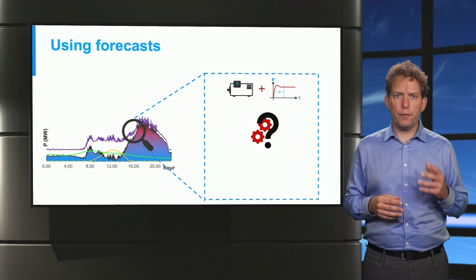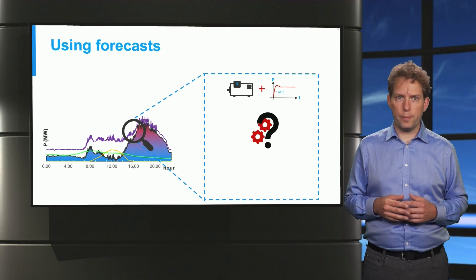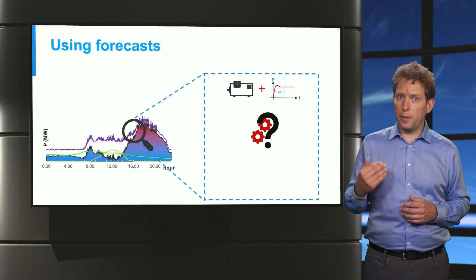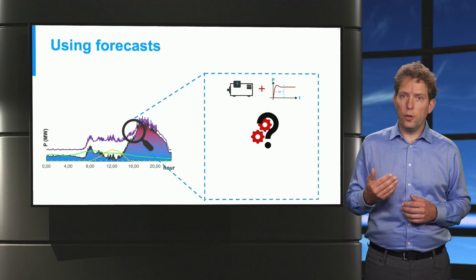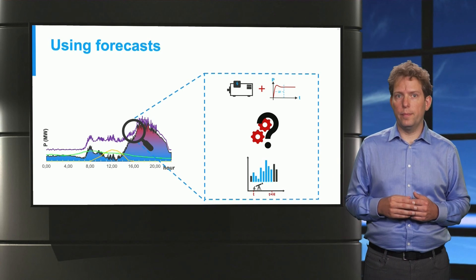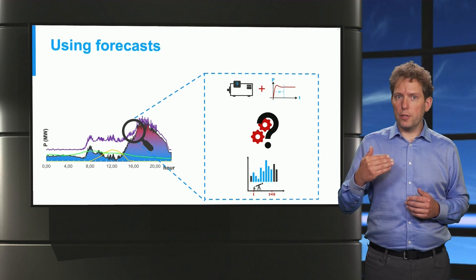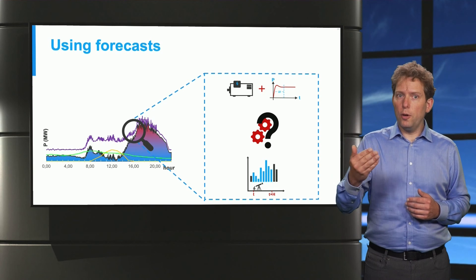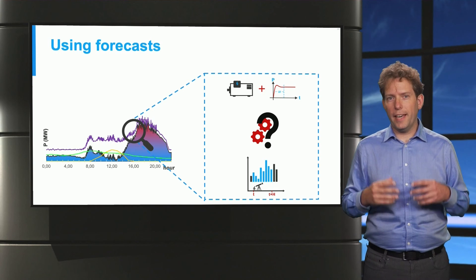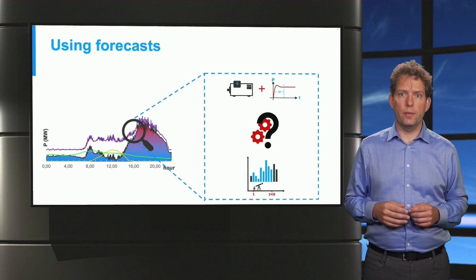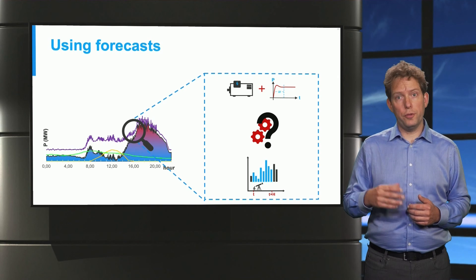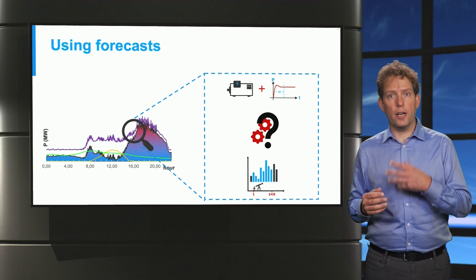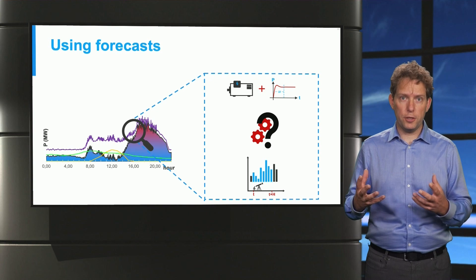So one crucial complicating factor are the ramp constraints of generators. They link what a generator can do in the future to what it is doing now. And that means we must consider what will happen in the future when making decisions about the present time. And this is done using forecasts. Forecasts of future energy demand and forecasts of future renewable energy production.